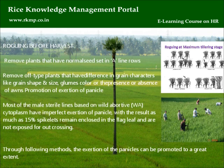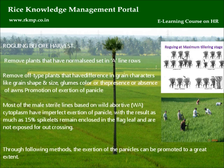Roguing before harvest: Remove plants that have normal seed set in A-line rows. Remove off-type plants that differ in grain characters such as grain shape, size, gloom color, or presence or absence of awns. Promotion of exertion of panicle: Most male sterile lines based on wild abortive (WA) cytoplasm have imperfect exertion of panicle, resulting in as much as 15% of spikelets remaining enclosed in the flag leaf and not exposed for outcrossing.